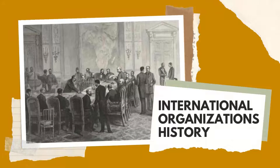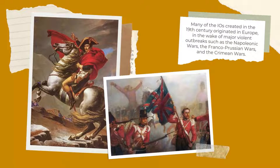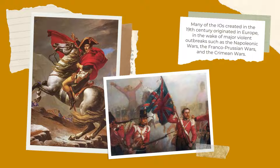Modern international organizations began in the mid-19th century when states created a small number of organizations to work together on specific issues such as health and trade. Many of the international organizations created in the 19th century originated in Europe in the wake of major violent outbreaks such as the Napoleonic Wars, the Franco-Prussian Wars, and the Crimean Wars.